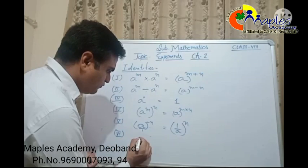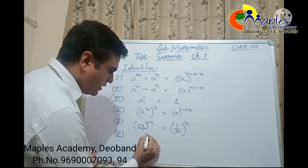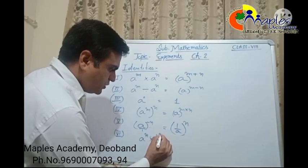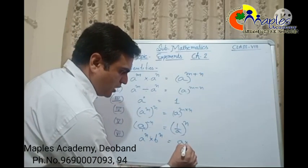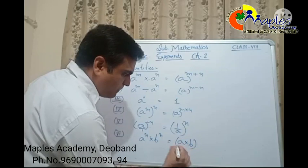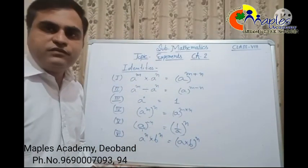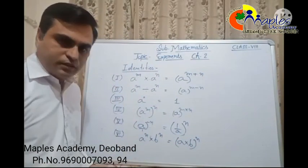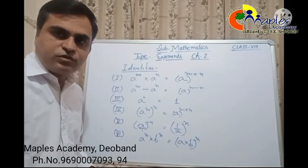Identity number six: if a raise to the power n multiplied by b raise to the power n, we can also write this as a into b, whole raise to the power n. These are the identities used in this chapter. Now we move to our next topic.